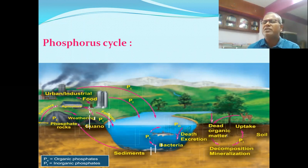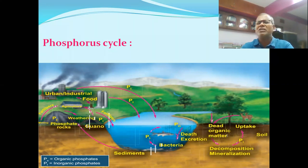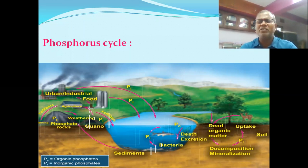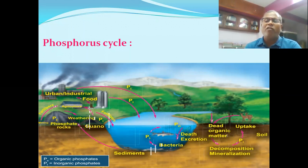The excreta of sea birds, normal birds, as well as bats are collectively known as guano. Guano is an important source of phosphorus. The waste — the excreta of sea birds — is called guano, and it returns phosphorus to the ecosystem as a sediment or fertilizer source.